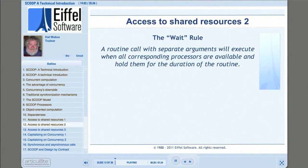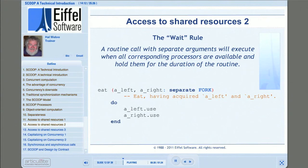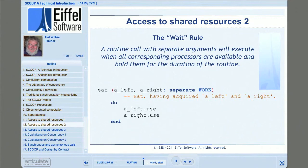Here's another SCOOP rule that helps ensure synchronized access to shared resources: the wait rule. It states that a routine call with separate arguments will execute when all corresponding processors are available, and holds them for the duration of the call. 'Corresponding processors' means any SCOOP processor handling one of the objects associated with the feature's separate arguments. In the dining philosopher's example, the eat routine takes two arguments of type separate fork. The wait rule says the processor responsible for executing eat will wait until the processors associated with A_left and A_right are available for exclusive access before applying the feature.